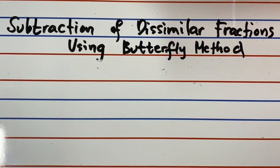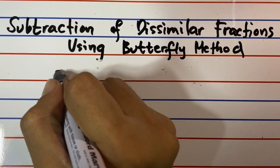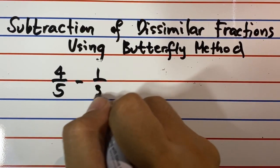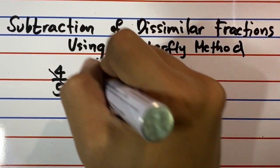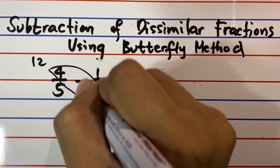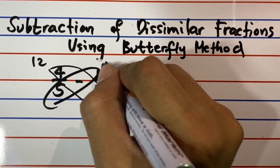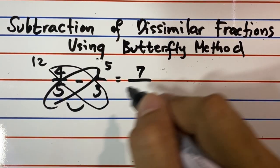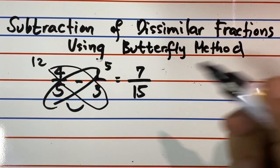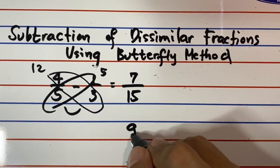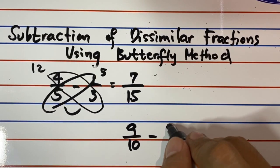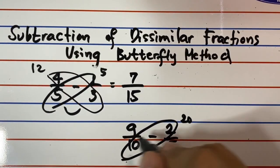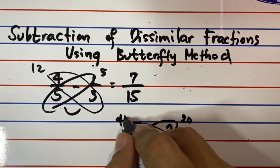How about subtraction of dissimilar fractions? The same procedure applies, but of course, the difference is that we simply subtract the numerators after getting their products. The rest of the procedure remains the same. Just watch and learn.